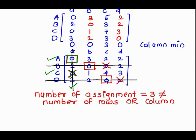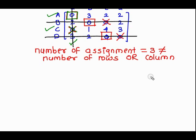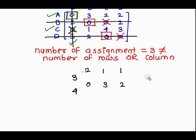We subtract 1 from all uncovered elements, giving 2, 1, 1, 0, 3, 2. We then add 1 to the intersecting elements, which were 2 and 3, giving 3 and 4. The remaining entries are taken as is: 0, 0, 0, 2, 0, 2, 0, 0.